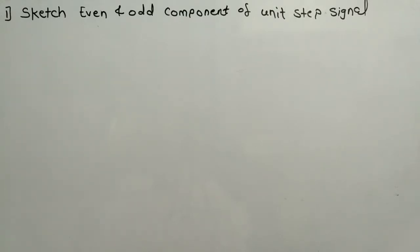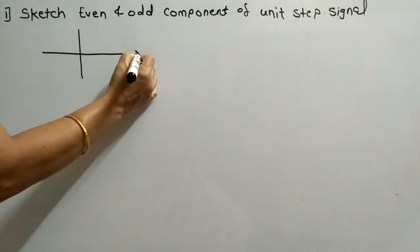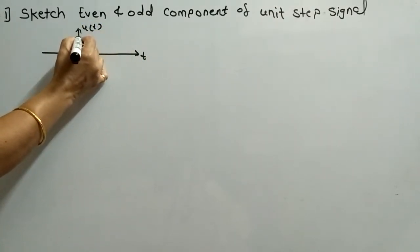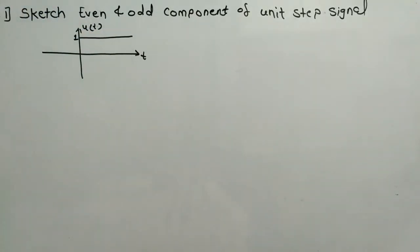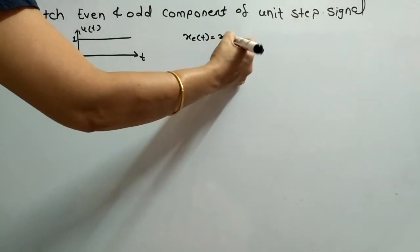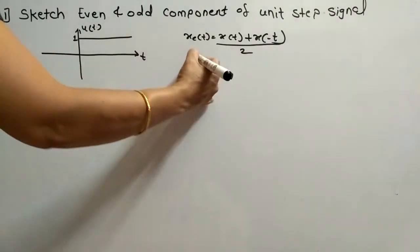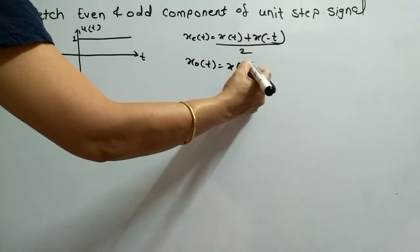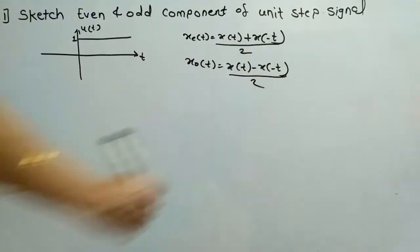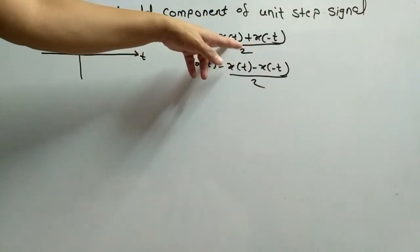Whenever we want to sketch the even and odd components, the first step is to sketch the original signal as it is. Here we are interested in the unit step signal U(T), so we will sketch that first. The amplitude of the signal is 1. The formula for calculating the even component is X_E(T) = [X(T) + X(-T)] / 2, and for the odd component it is X_O(T) = [X(T) - X(-T)] / 2. So for sketching the components we need X(T) and X(-T), where X(T) means U(T).